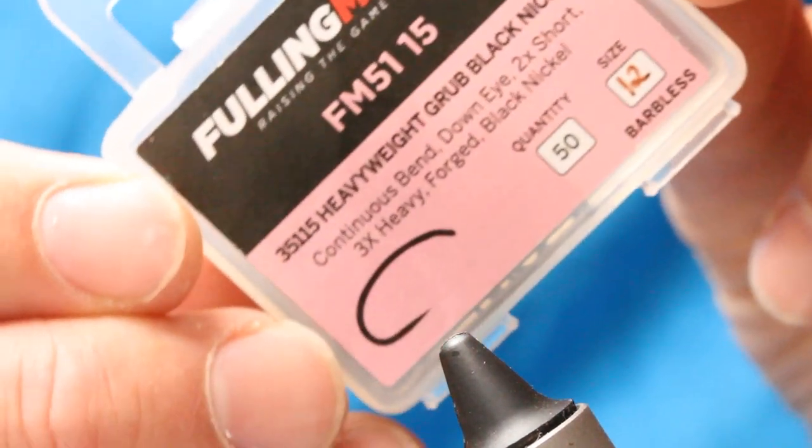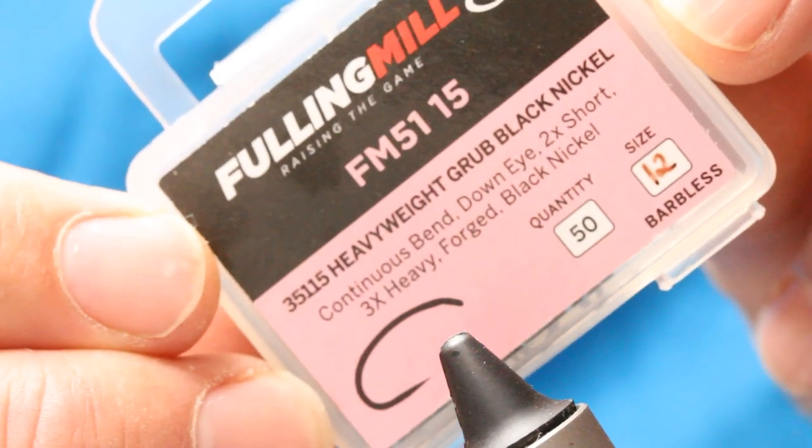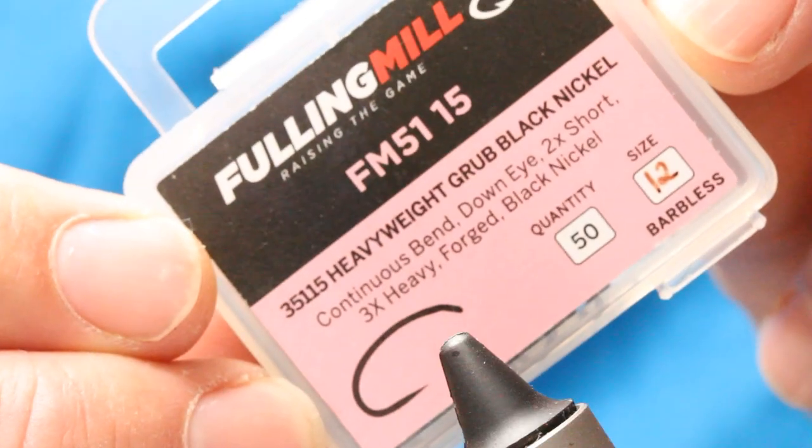I'm going to start off with a heavyweight grub hook in black size 12. There's enough yarn in this to keep this up. It's quite a solid hook because it's for a big fish.